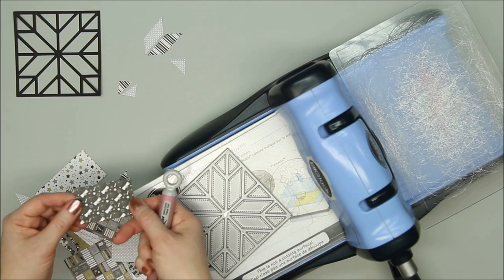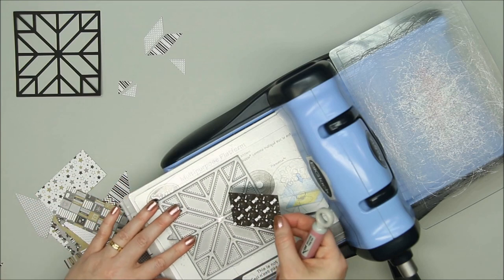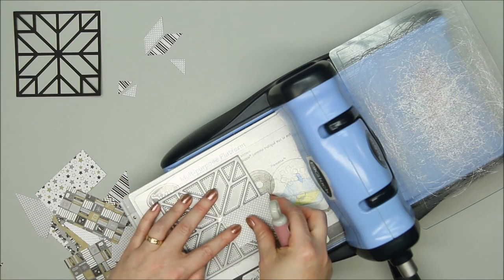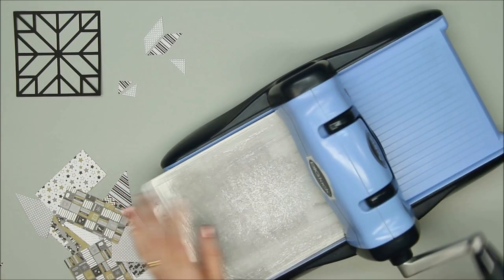If your dies aren't cutting evenly, it can be helpful to rotate the die 45 degrees and then run it through the machine again.